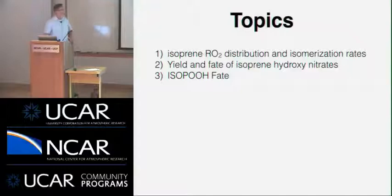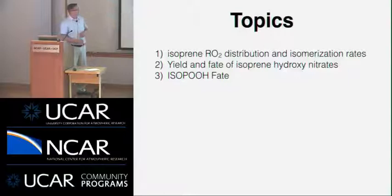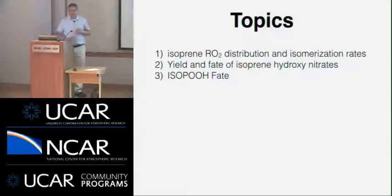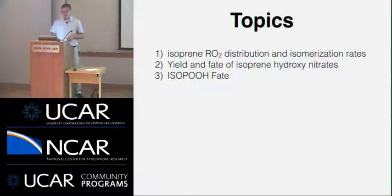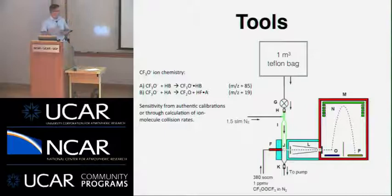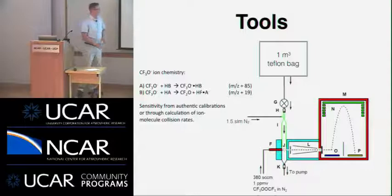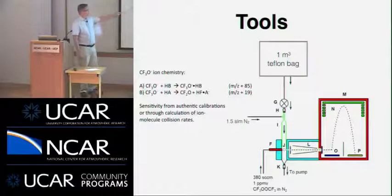The topics I'd like to discuss today include: what is the isoprene RO2 radical distribution and what are the isomerization rates — we'll use laboratory studies and data to constrain those ideas; what is the yield and the fate of the isoprene hydroxynitrates; and finally I'll give updates on constraining studies for how the isoprene hydroxyhydroperoxides react and what they make. The tools we've used to study these things, both in the laboratory and in the field, have been chemical ionization mass spectrometers.